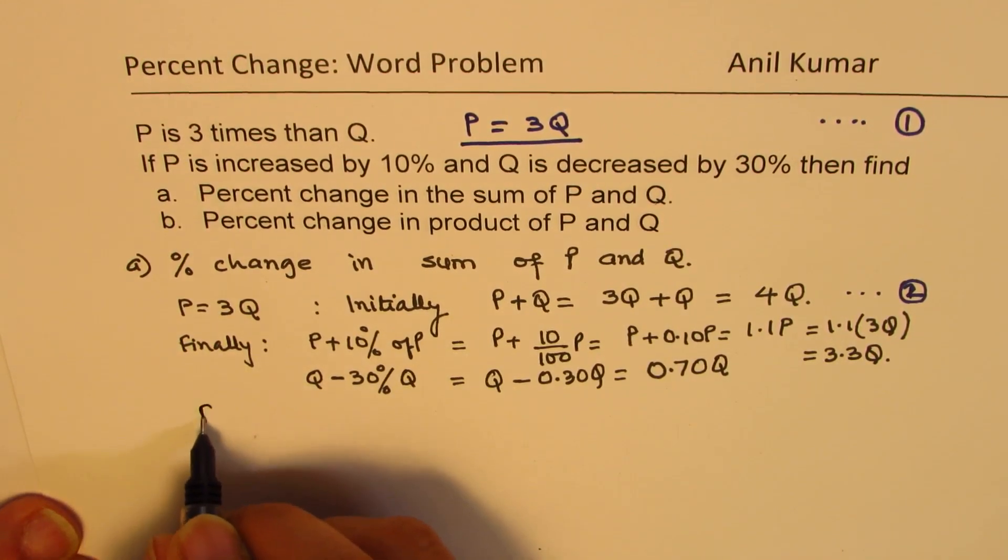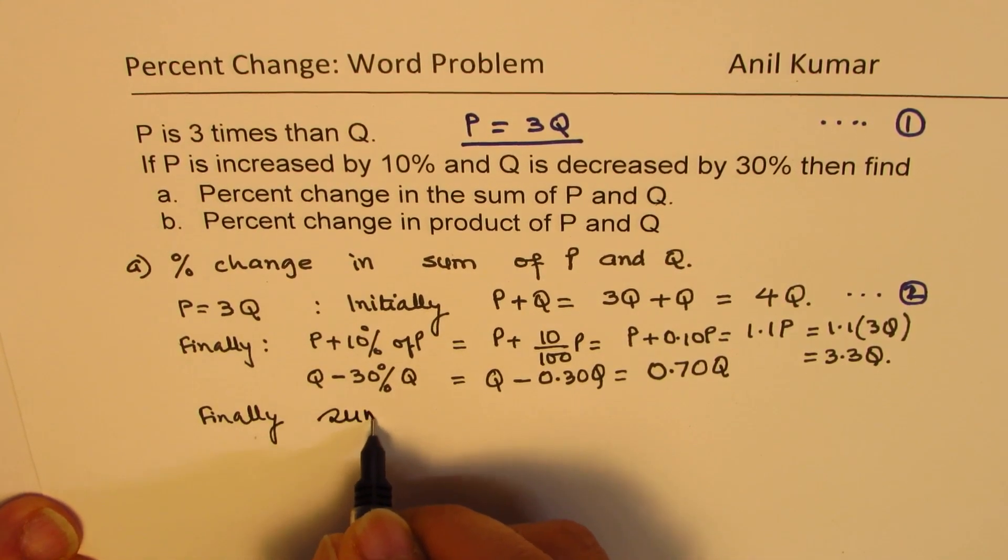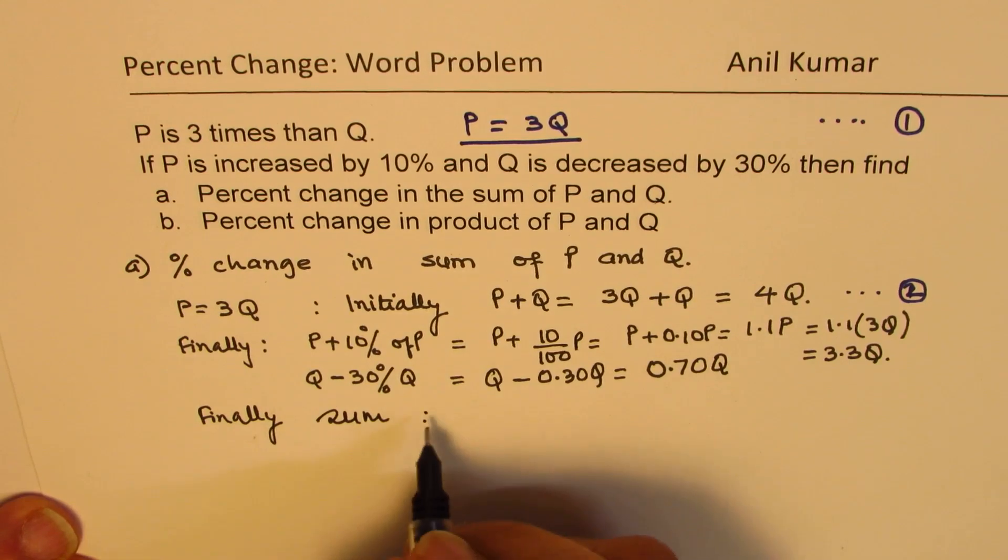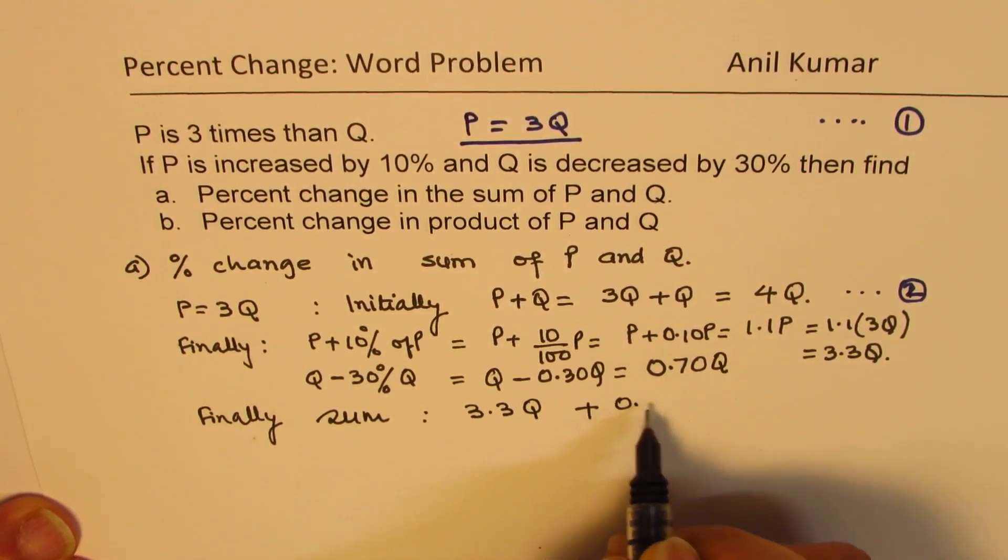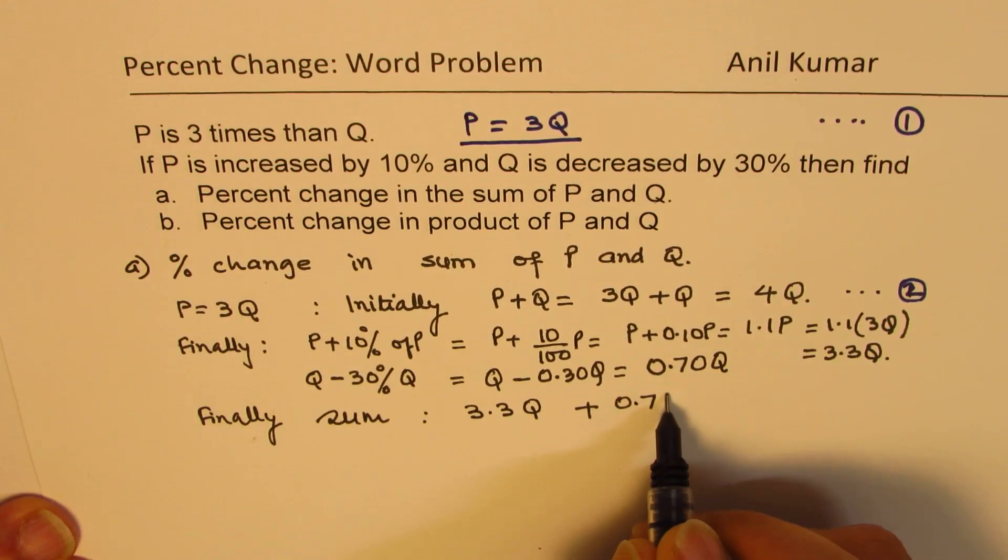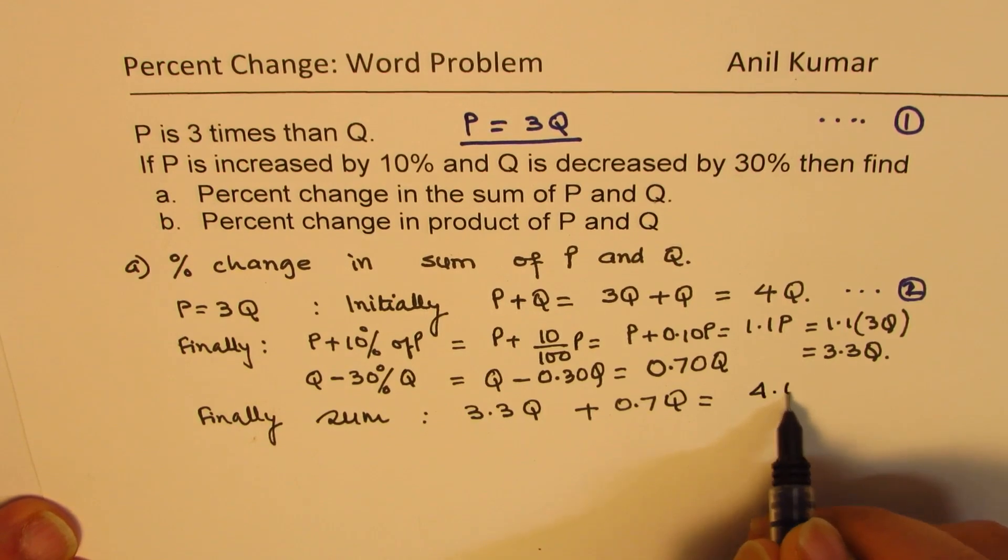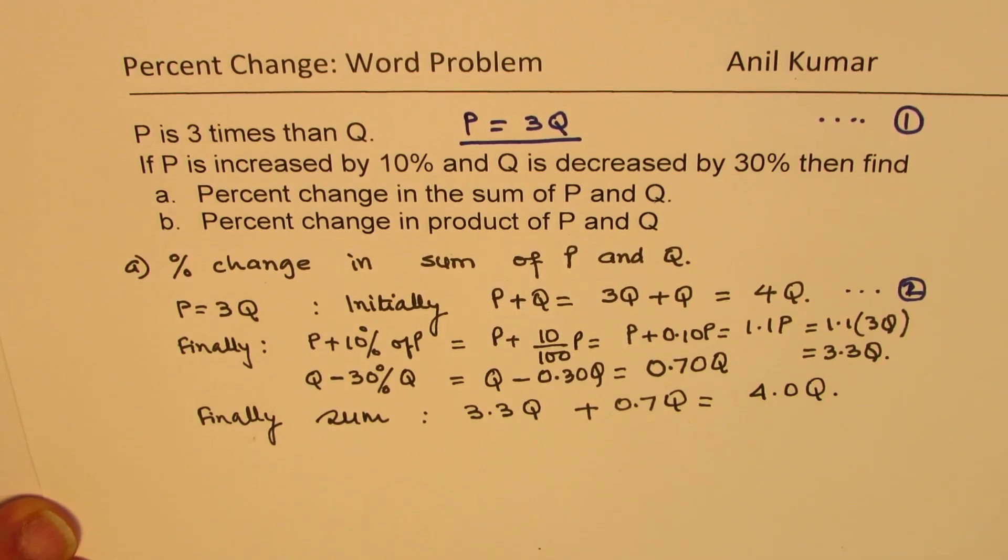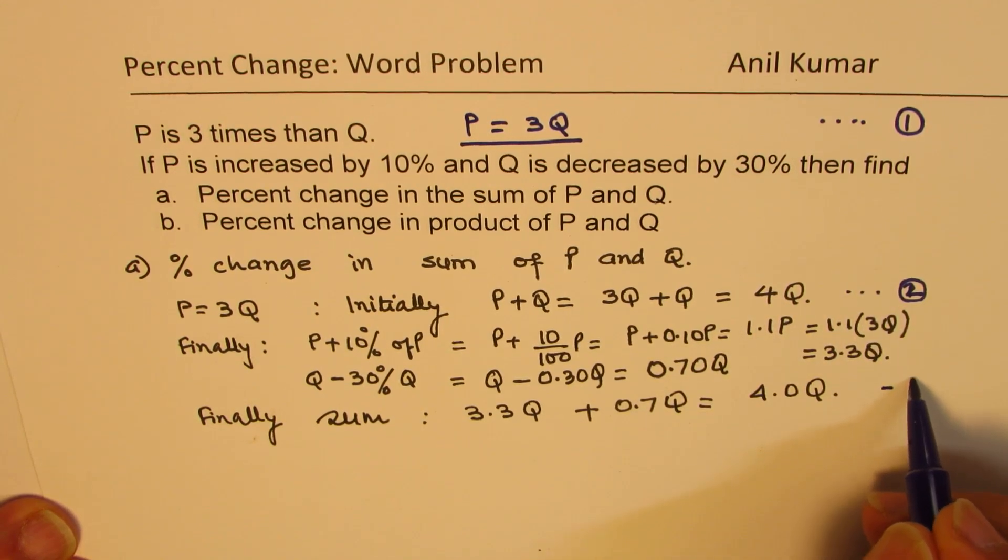Finally, sum is what? Sum is 3.3Q plus 0.7Q, which is same as 4.0Q. So we get that initially it was 4Q. Finally, also it is 4Q.